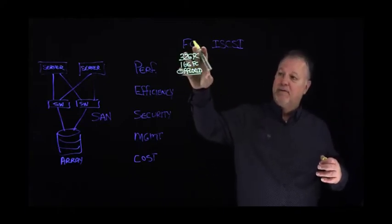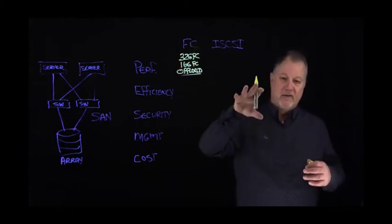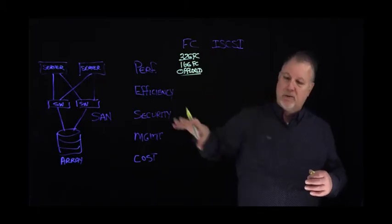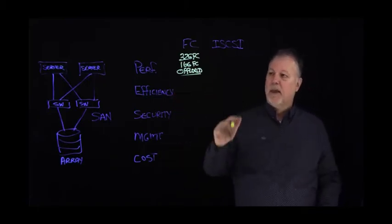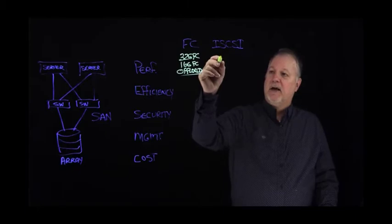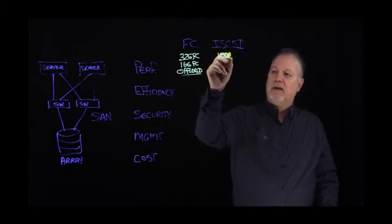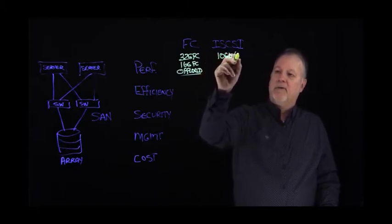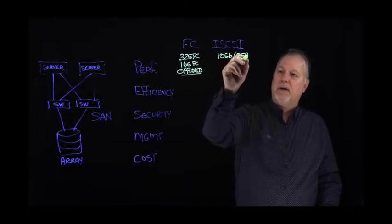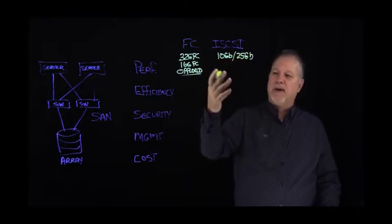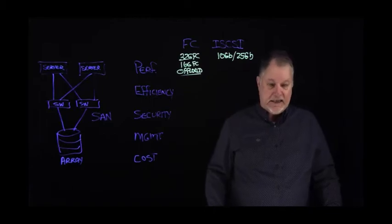iSCSI today, we have 10 gigabit and we have predominantly 25 gigabit. So from a bandwidth perspective, we're relatively even. Fiber Channel has a little bit of an advantage.